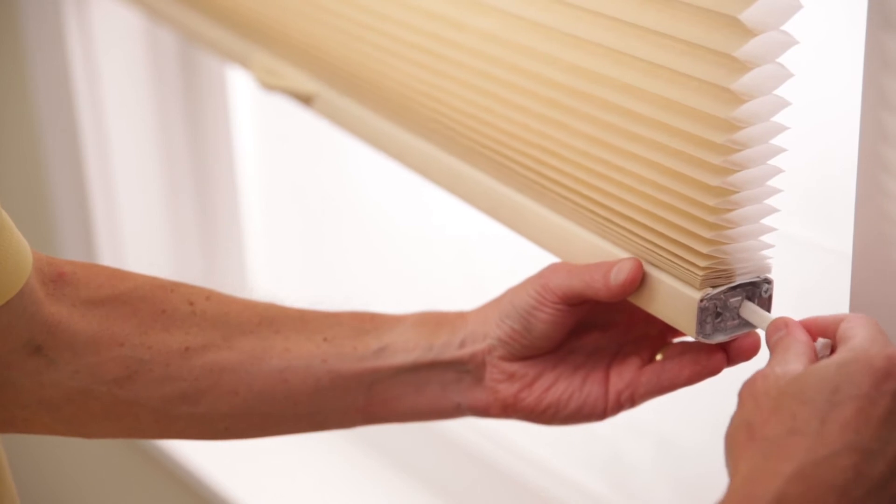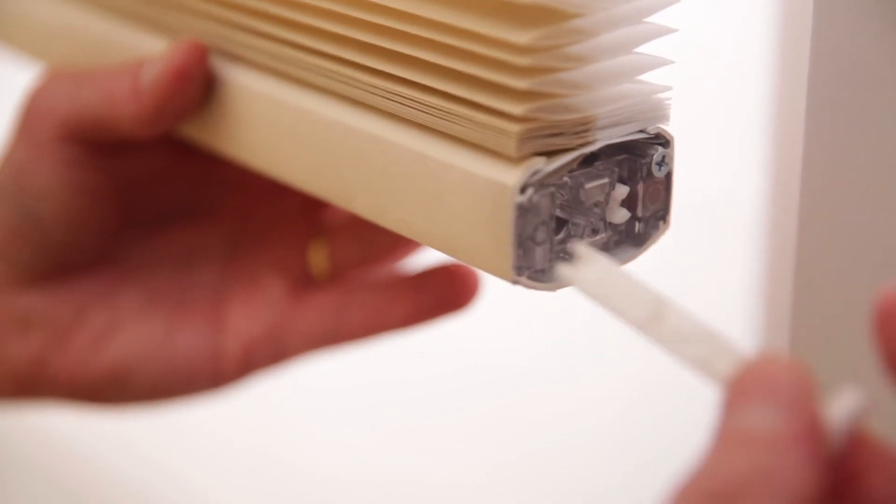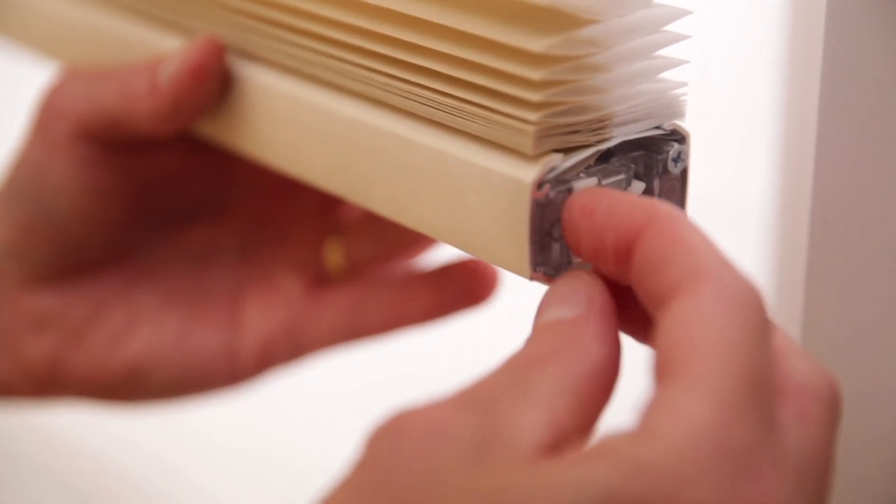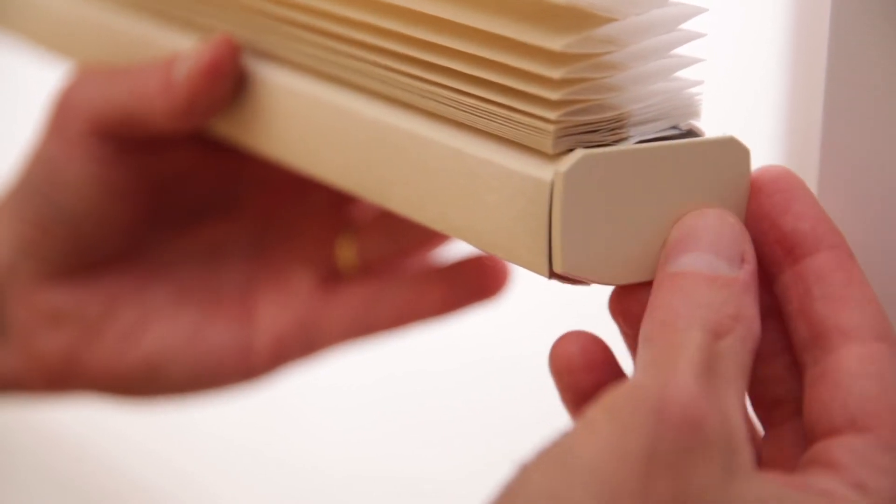When the shade has been adjusted to the desired level, remove the tool from the dial and insert it back into the bottom rail. Then replace the end cap.